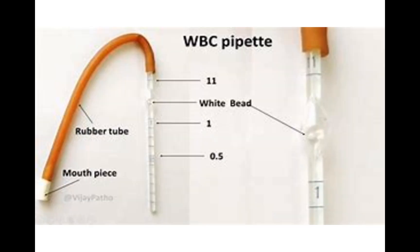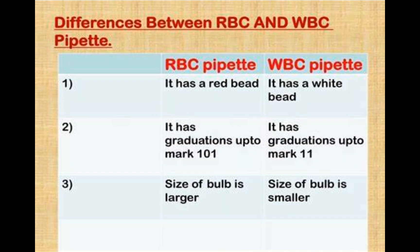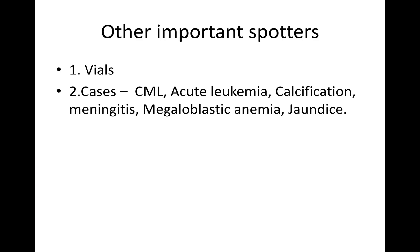We have finished with this video. Other important spotters are vials, which we've already made a video on. The next video will be about spotters like CML, acute leukemia, calcification, astrocytoma, meningitis — where you'll have to tell if it's bacterial, viral, or fungal — megaloblastic anemia, and jaundice with types of hyperbilirubinemia. I hope this was helpful, thank you very much.